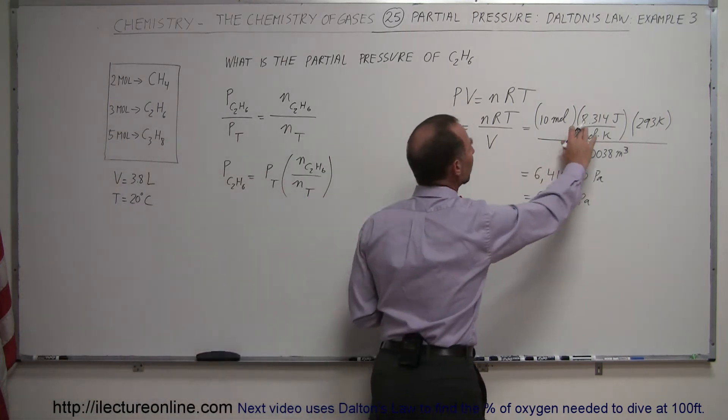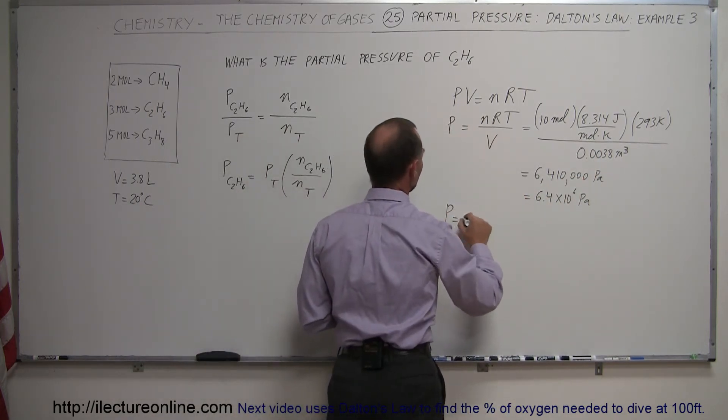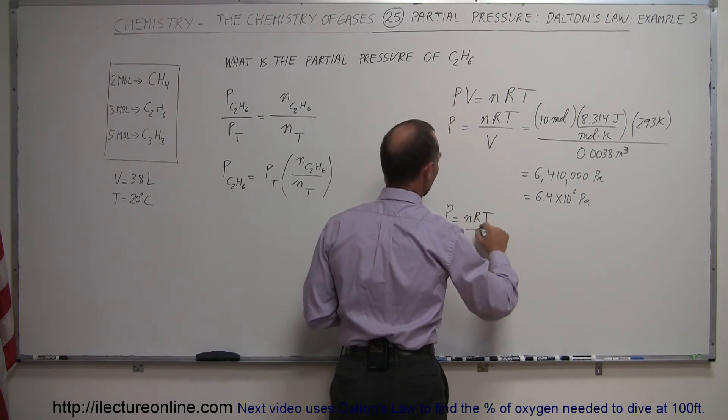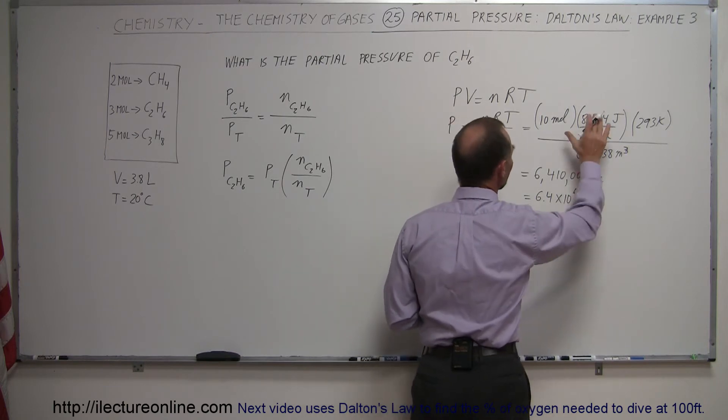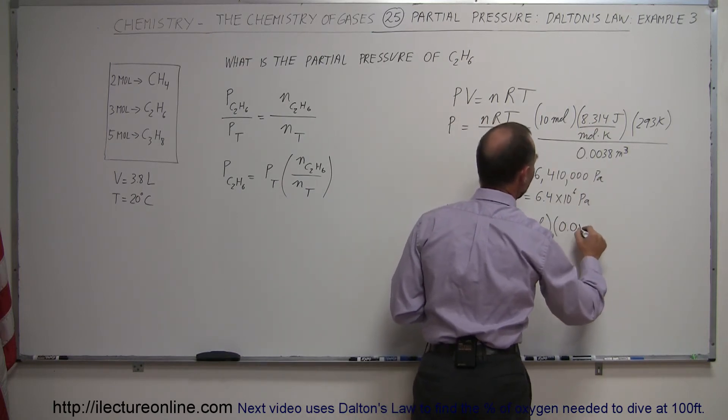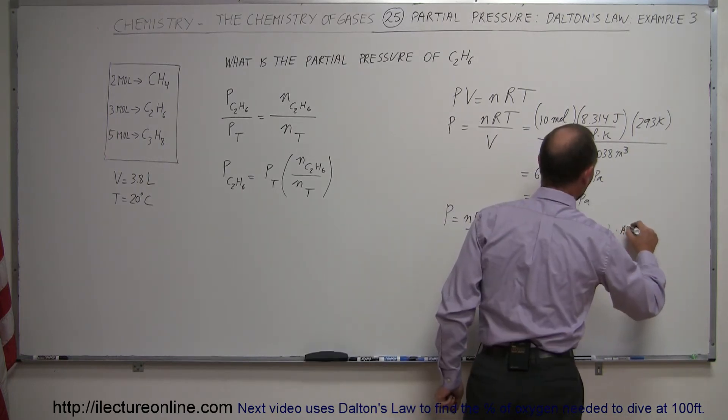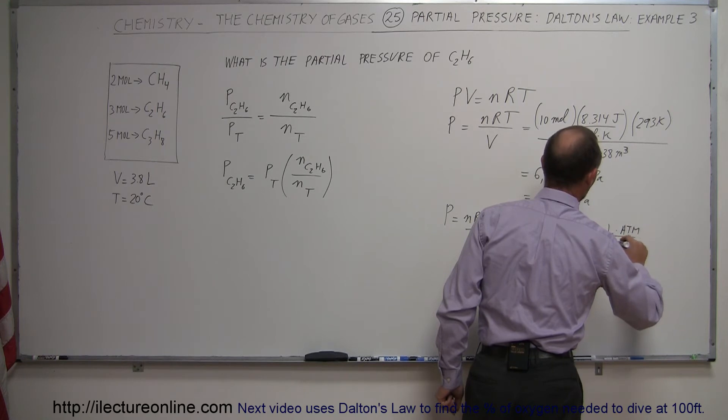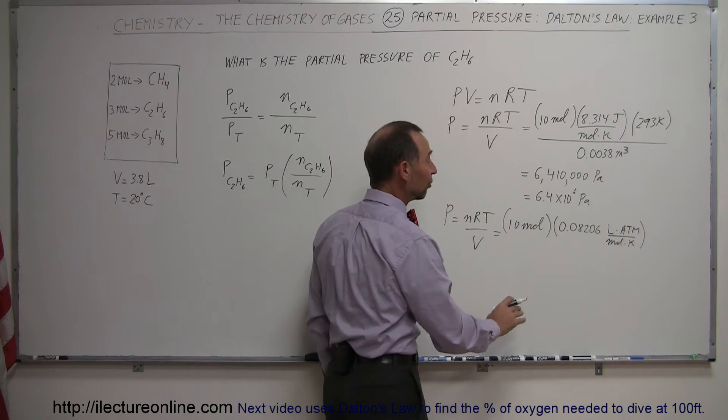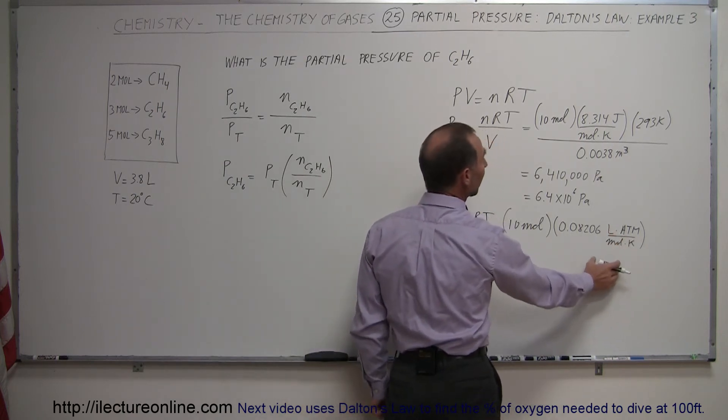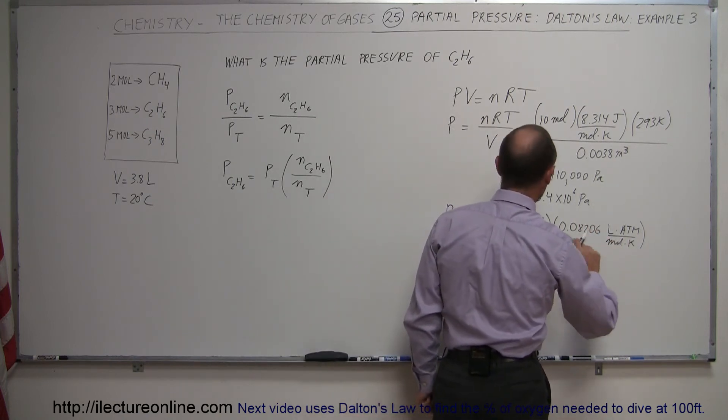Instead of using R as 8.314 joules per mole per Kelvin, we can write P equals nRT over V. We still have 10 moles, but now we use the gas constant as 0.08206 liters times atmospheres divided by mole times Kelvin. Our answer will now come out in liters and atmospheres rather than cubic meters and Pascals.